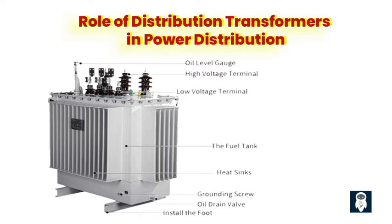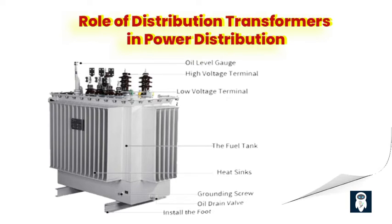Understanding the role of distribution transformers in power distribution: imagine a world without distribution transformers — there would be a chaotic mess of high voltage electricity coursing through our homes and businesses. Distribution transformers come to the rescue by reducing the voltage from the transmission lines to a safe and usable level, typically around 120 to 240 volts. These transformers act as silent heroes, working behind the scenes to ensure our appliances, gadgets, and lights can function properly, enabling power to be efficiently distributed to our homes, offices, and beyond.